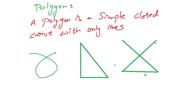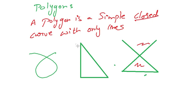For example, this cannot be considered as a polygon. Though this polygon is closed at the bottom, it is open on the top side. Therefore, a polygon cannot be open in any way. A polygon should be only closed and should not be open at any side.